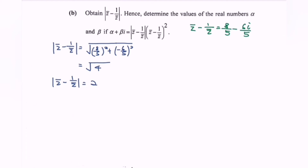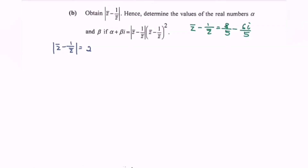Determine the value of the real numbers alpha and beta. Given that alpha plus beta i equals 2 multiplied with the bracket 8 over 5 minus 6i over 5, all squared.